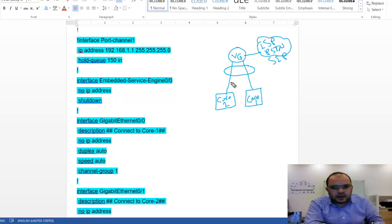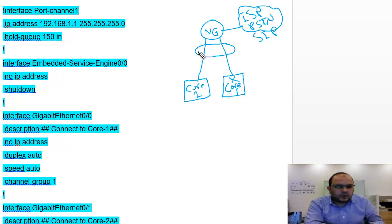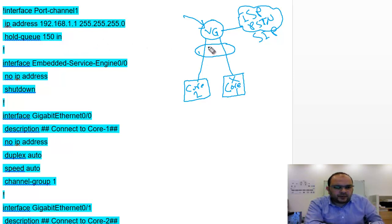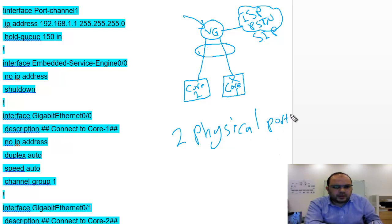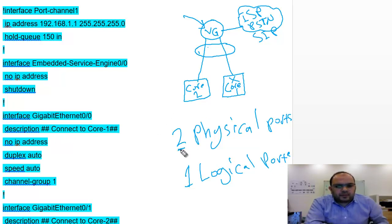I have two links and I set them up for redundancy. For example, if core switch number one fails or goes down, core switch number two will take over and the voice gateway will keep working smoothly. To handle these two physical links inside the voice gateway, I will combine them into one logical port — a port channel. So I will create an interface port channel.